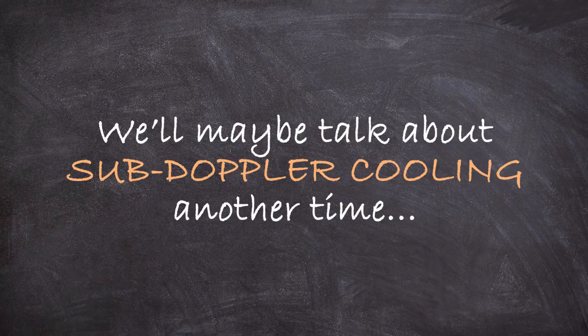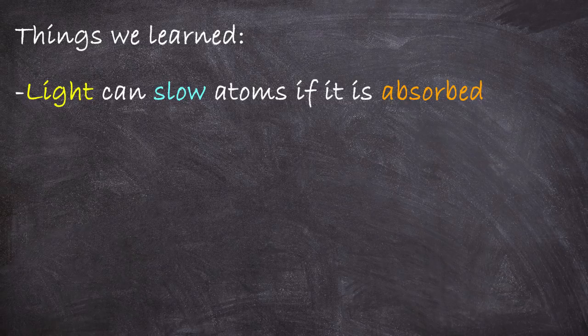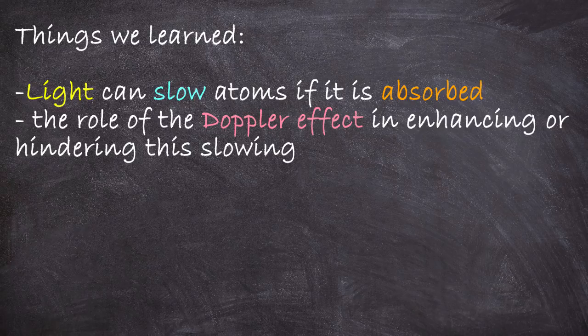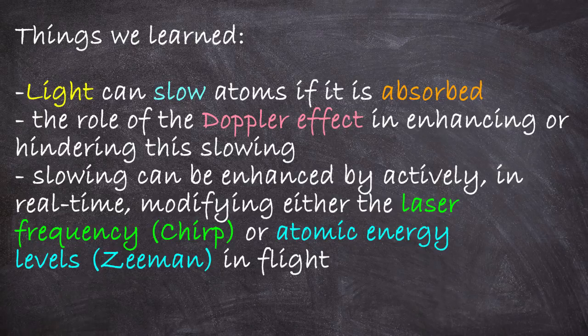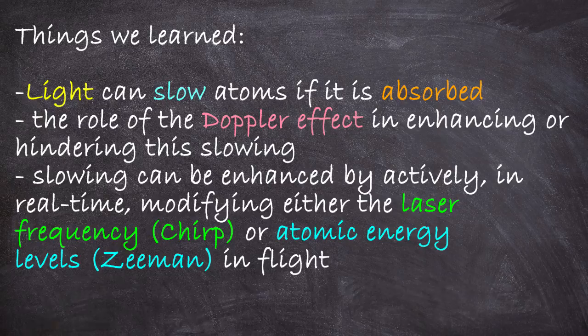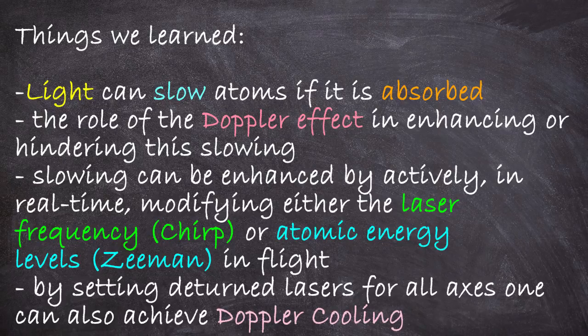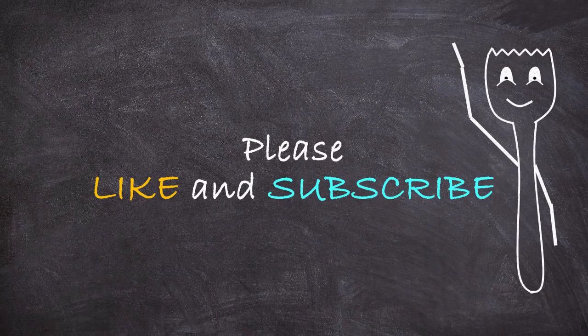So, in this video, we learned about how to use light to cool things down, about how light's momentum can be used to push a speeding atom and slow it, and about how the Doppler effect can work against such attempts. We also learned about how these issues can be addressed by either actively changing the frequency of the laser in flight, which is called chirp cooling, or by actively modifying the resonances of the atoms using magnetic fields, which is called Zeeman slowing. And finally, we learned about how one can use multiple counter-propagating lasers that are detuned to a resonance to both trap and cool a gas of atoms, which we call Doppler cooling. All right, everyone. Please like and subscribe to the channel if you like this stuff, and have a good one.